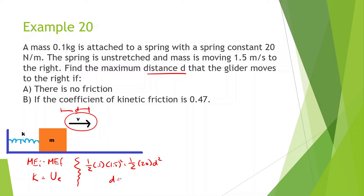Now let's figure out what D is. We compute 1.5 squared times 0.1 times 0.5, divided by 0.5 times 20, then take the square root. And we get around 0.106 meters.